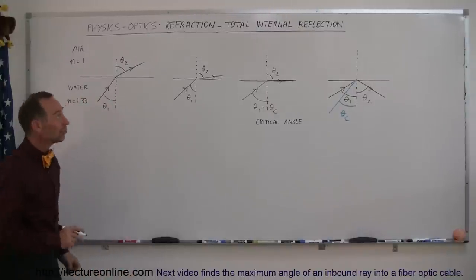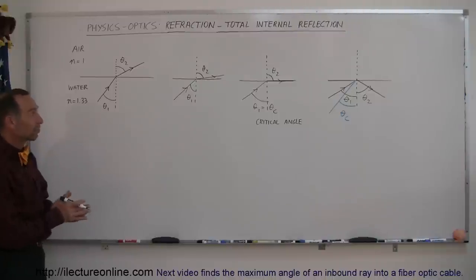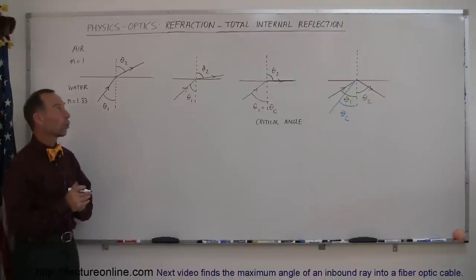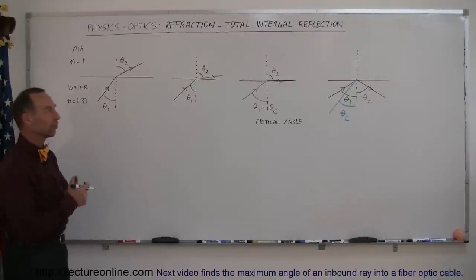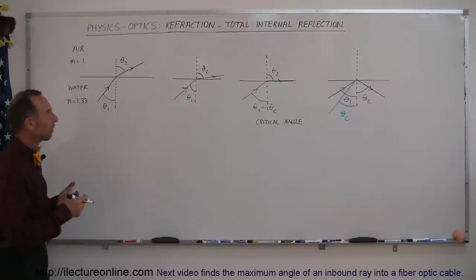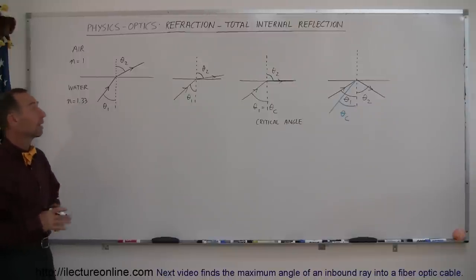Welcome to iLecture Online and here's a new topic considering refraction. It's something called total internal reflection. This is an interesting property of the fact that light refracts when it crosses a boundary.